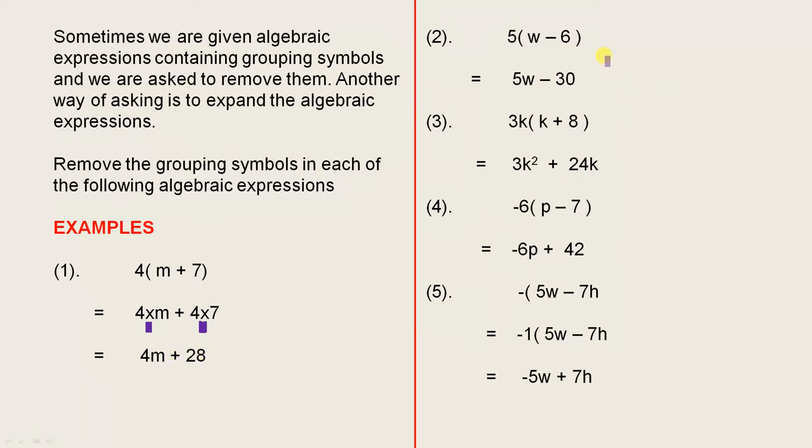5 outside of w minus 6. 5w minus 30. Remember, multiply this term by each term inside.